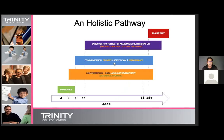Between the ages of three and seven, teachers around the world build a child's confidence through social learning pathways including drama. From about age five onwards, we work more closely on English language development — particularly the conversational and oral component. This is an area schools are unfortunately not able to focus on deeply, simply because of numbers — you cannot cater to 30, 40, or 80 students and give each the time to speak and listen.